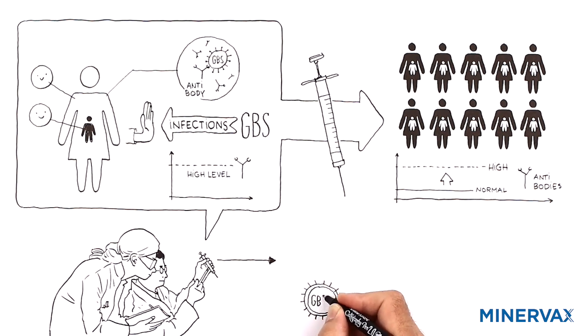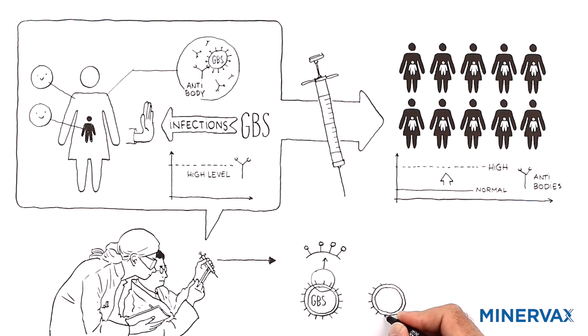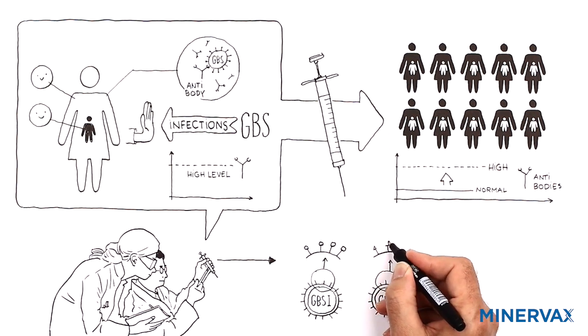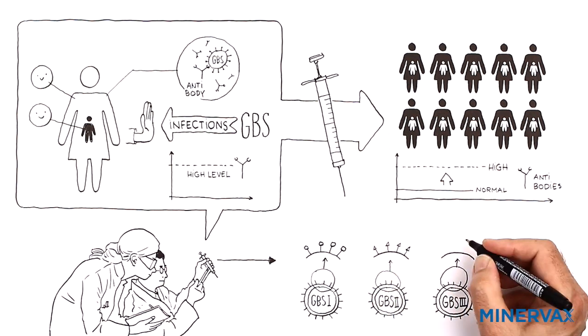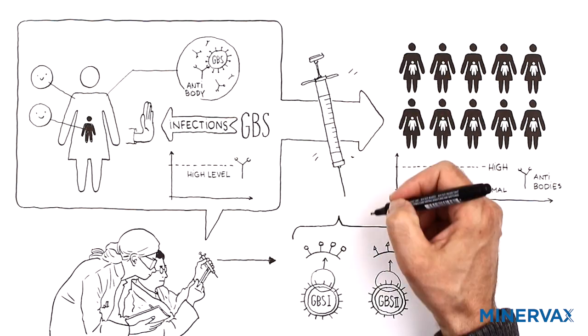GBS vaccines only contain surface components of the bacterium capable of inducing protective antibodies already found in naturally protected women. Due to different strains of GBS, the vaccines being developed contain more than one version of the surface components of the bacterium to cover as many different strains as possible.